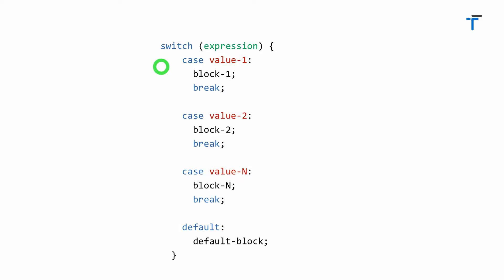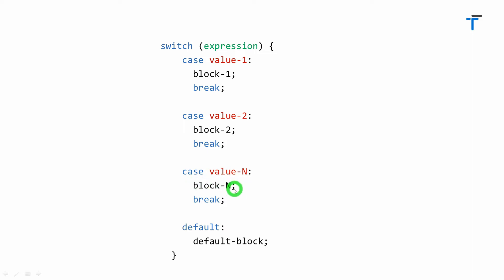The expression is first evaluated and the result is compared against each case label. If the result matches with value 1, then block 1 will execute and due to break, control will jump out of the switch case. If it is not matching with value 1, then the result is compared with value 2. If it matches, then block 2 will execute and due to break, control will transfer out. Even if it is not matching with value 1 or value 2, it will be compared with value n. If it matches, then that block will execute and due to break, it goes out of the switch case.